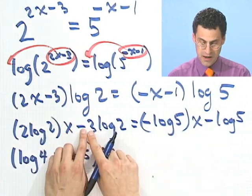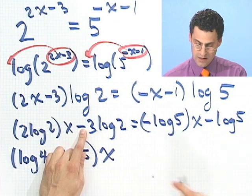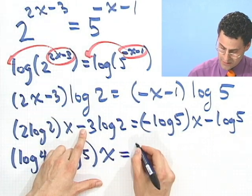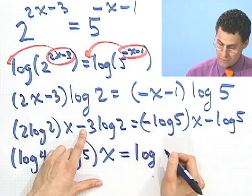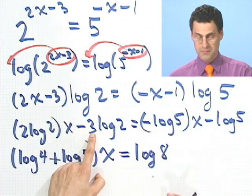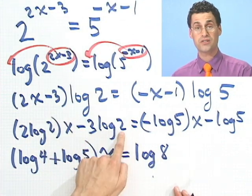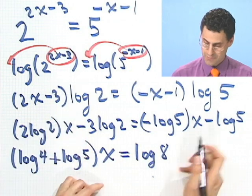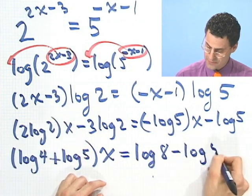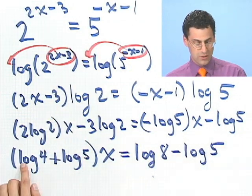And then if I bring this minus 3 log 2 over to this side, what does it look like? It becomes a plus 3 log 2, which is just a fancy way of saying log 8, because if I take that 3 and put it up as an exponent, it's 2 cubed, and 2 cubed is 8. But I still have that minus log 5.